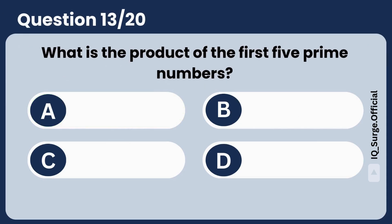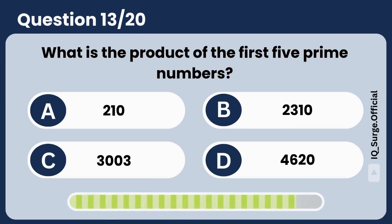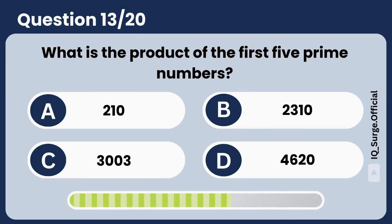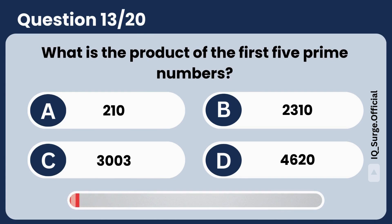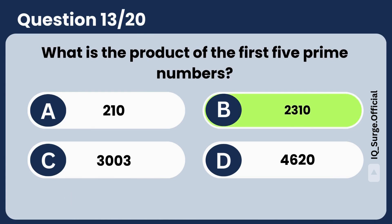What is the product of the first 5 prime numbers? Answer: 2310. Great calculation.